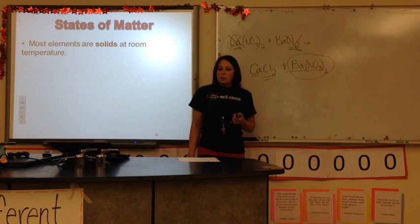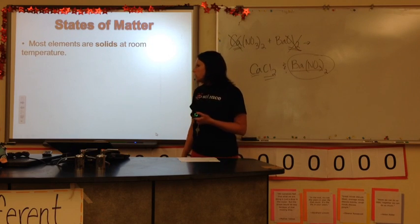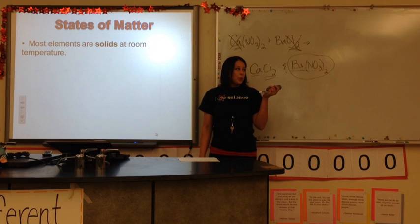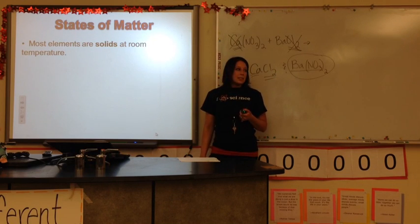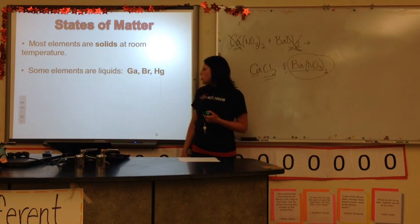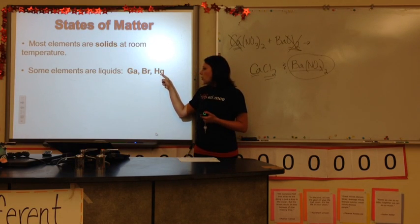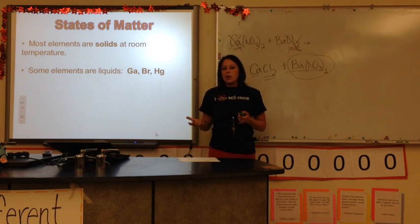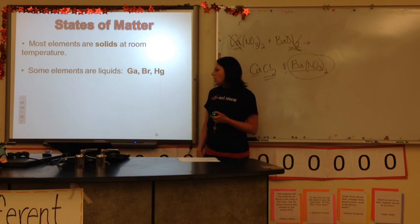Last thing — states of matter. Most elements at room temperature are solids. On our periodic table in the room, everything written in black letters is a solid. There are a few that are liquids at room temperature. Bromine and mercury are always mentioned, and gallium is right on the border of being a solid and a liquid — if it's in the palm of your hand, it's a liquid.